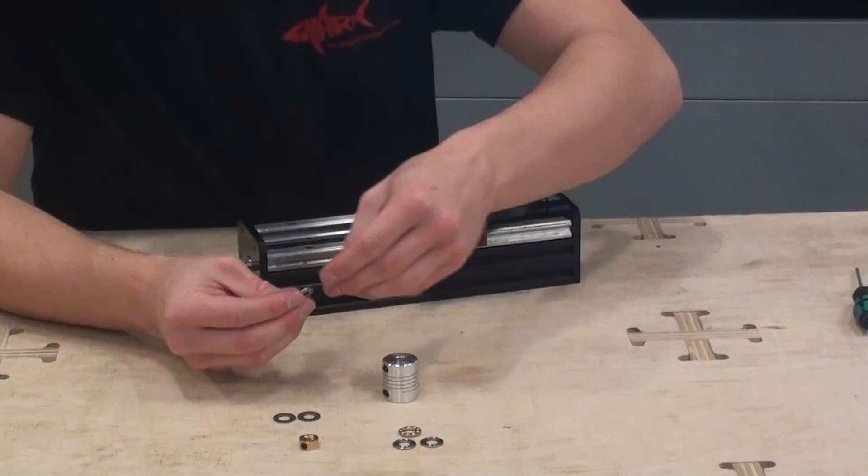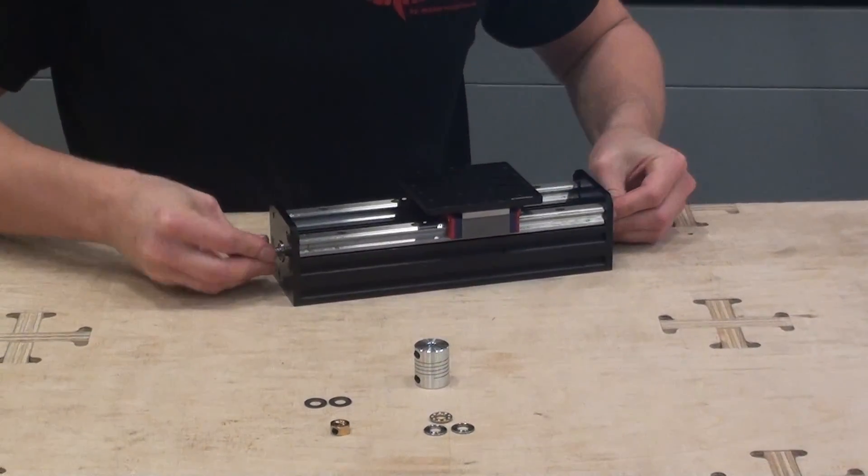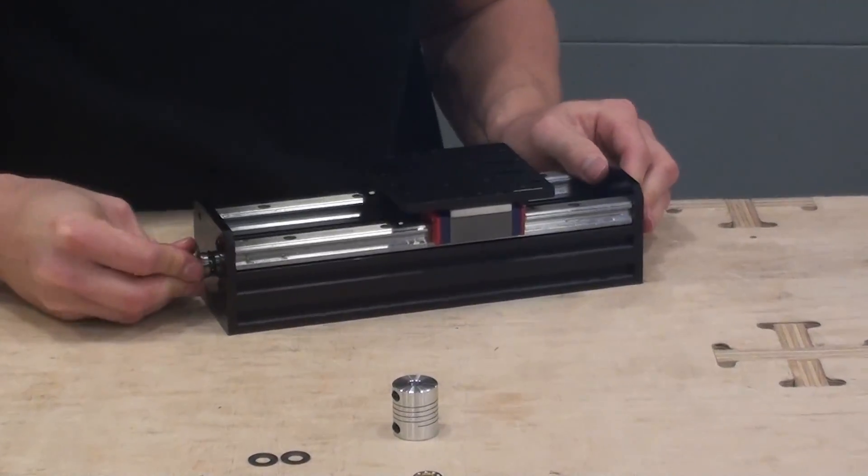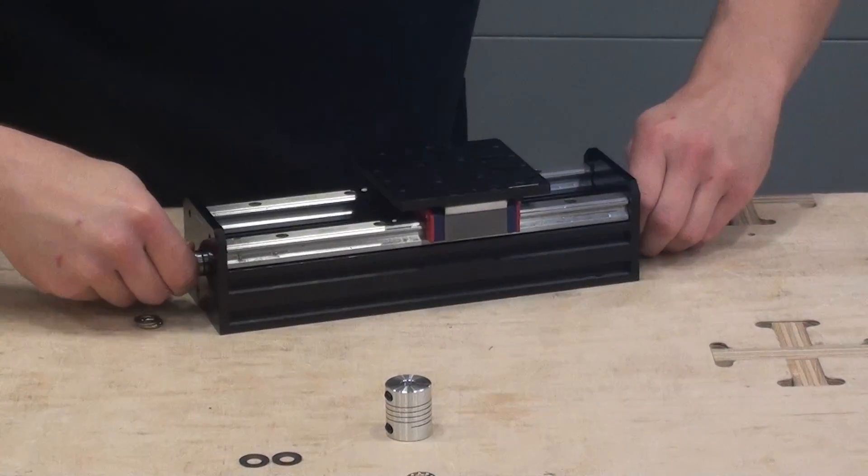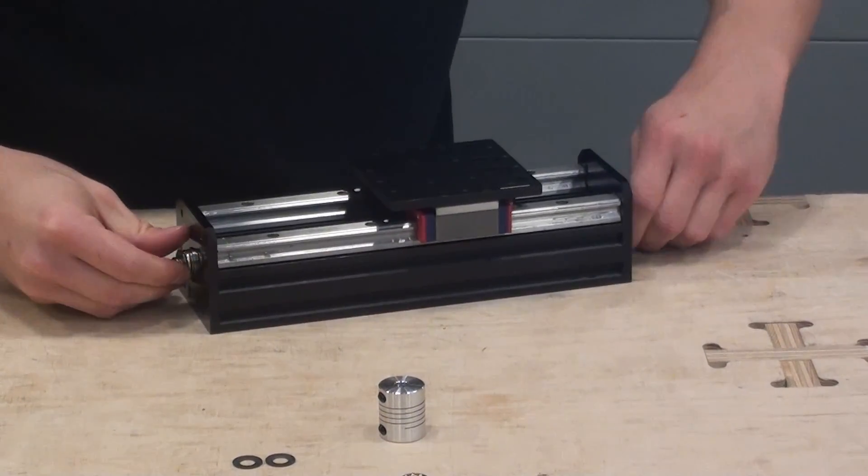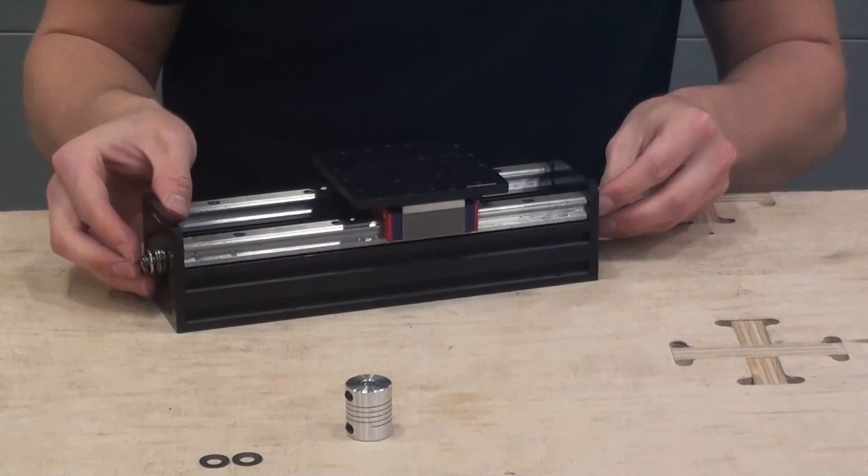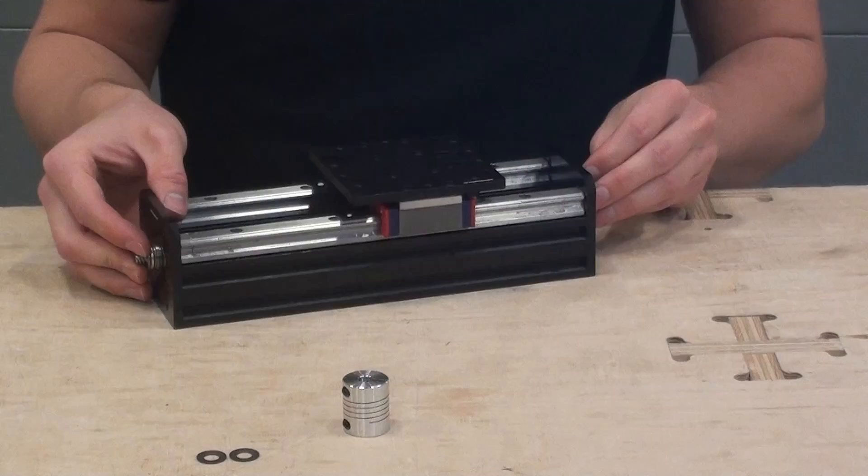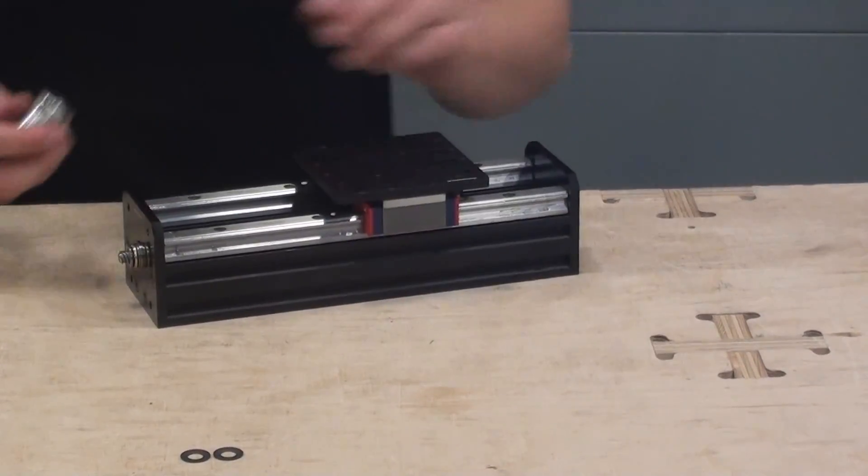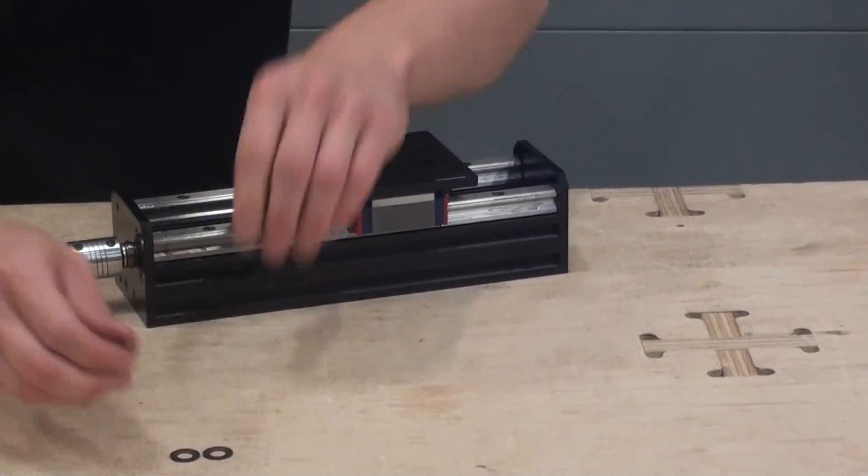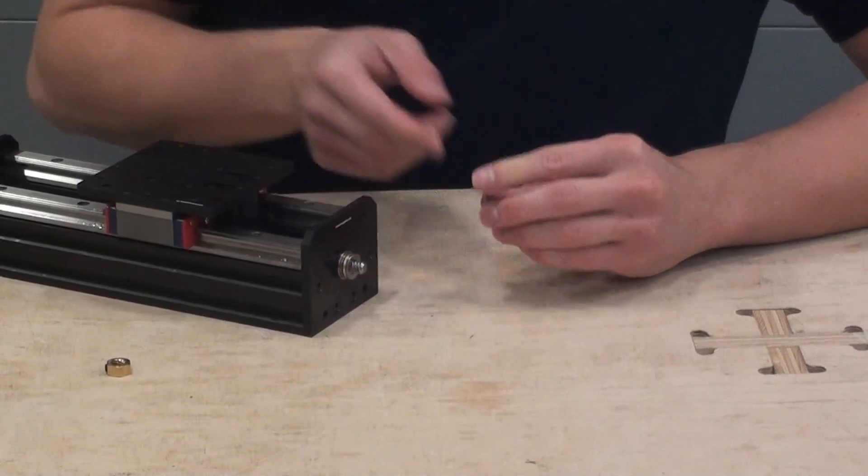Now I can put on the thrust bearings. Now I will use our dish springs in this side.